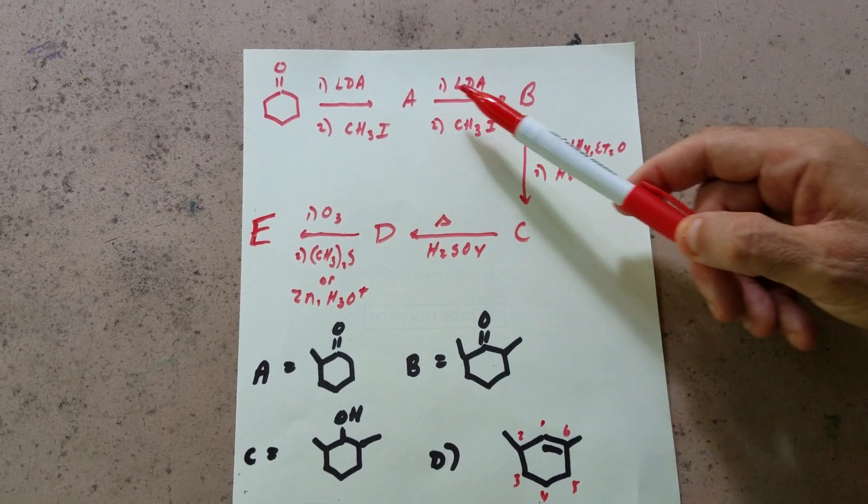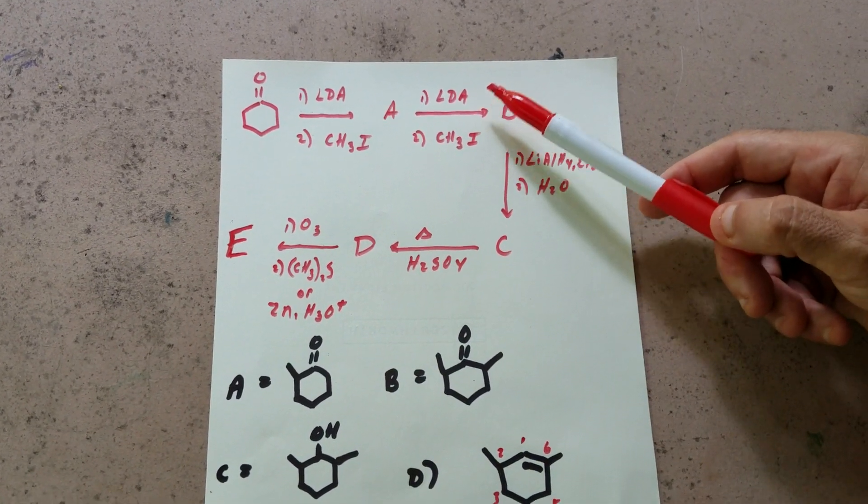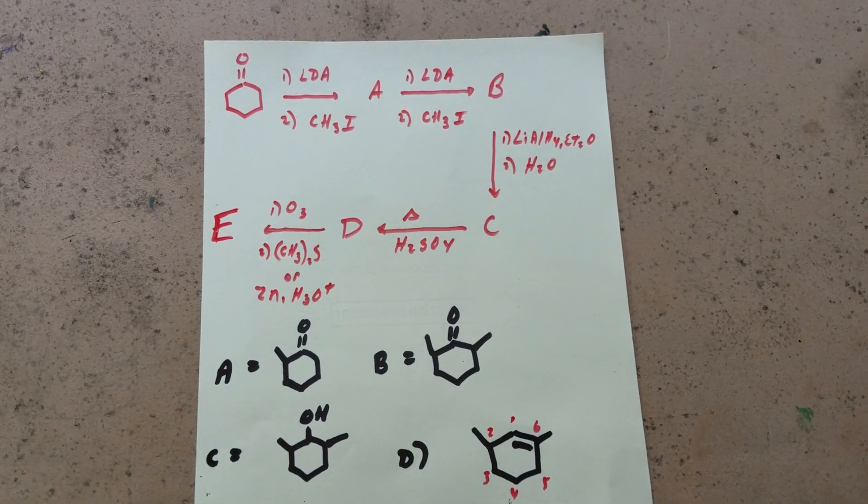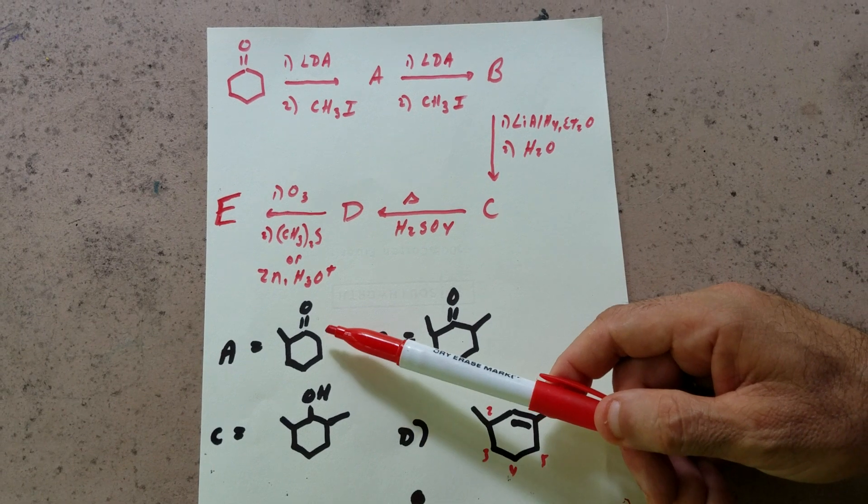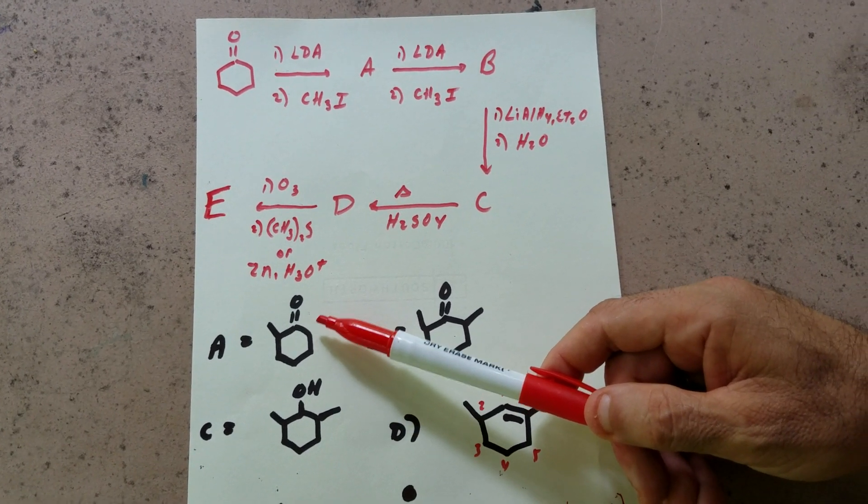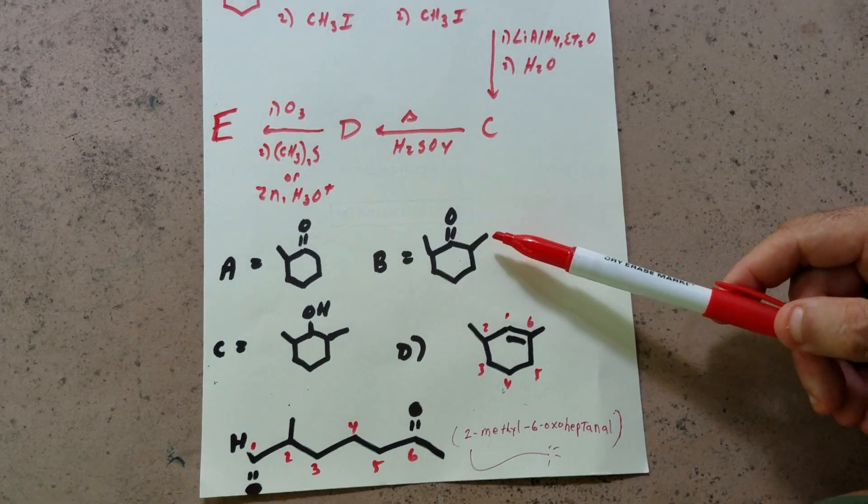It's a simple alkylation. Then we're going to do it again to the other side. Since LDA is a large sterically hindered base, it's going to remove the hydrogen at the less substituted position, meaning the easiest one to remove. So we remove an H and then put on the other methyl group.